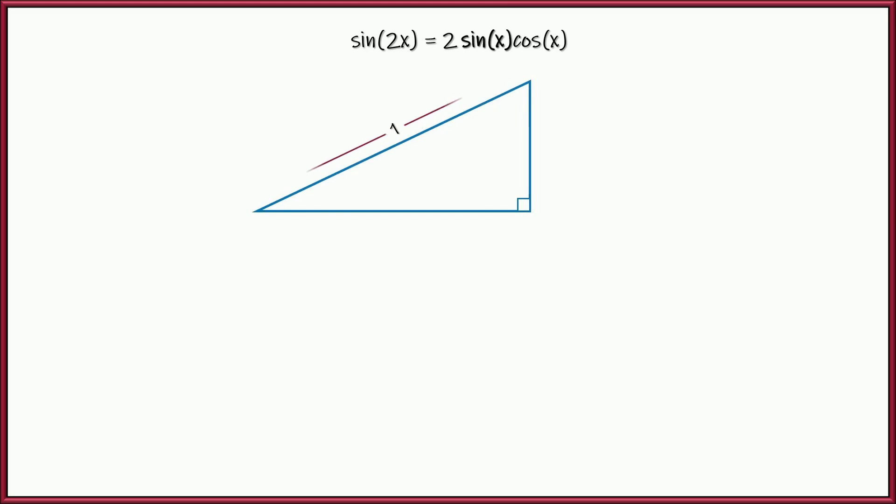So let's go ahead and start off with a right triangle. Hypotenuse is 1. Let's say this angle over here on the left is x, which makes the other angle 90 minus x. So if you take the sine of x, that's opposite over hypotenuse. Since the hypotenuse is 1, we're going to say the distance from here to here is just sine of x.